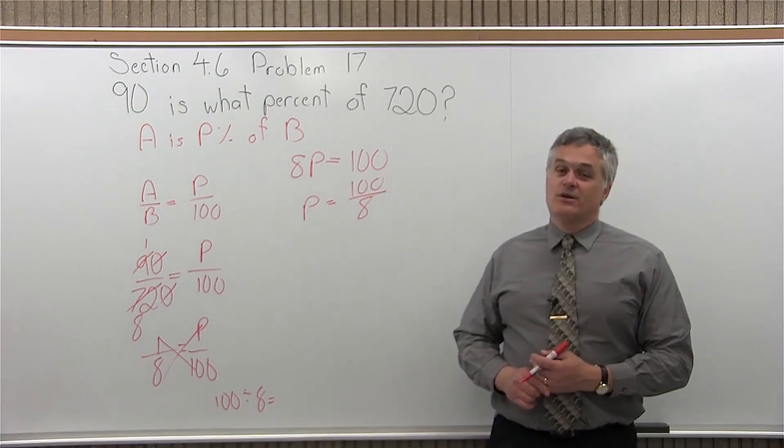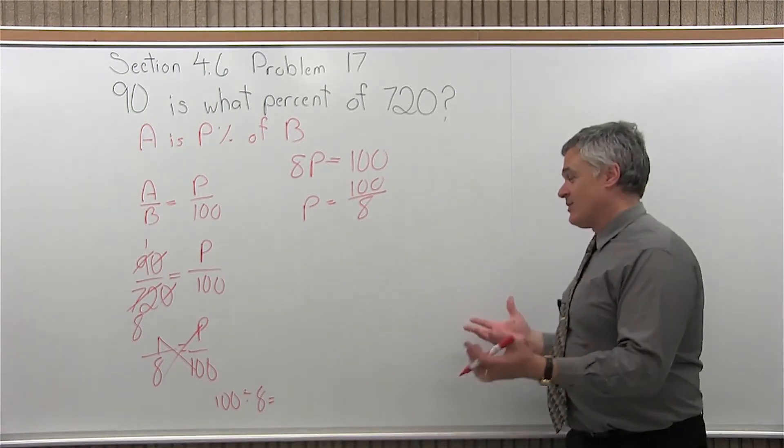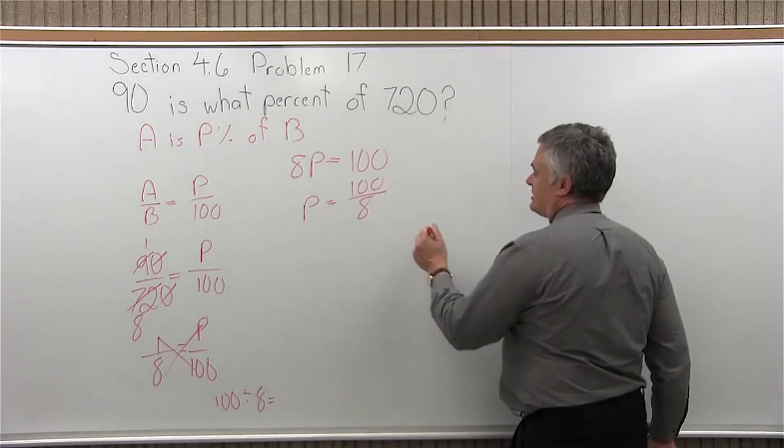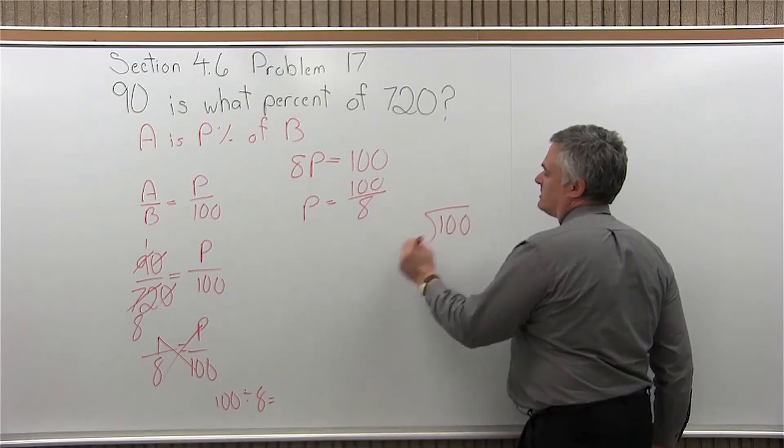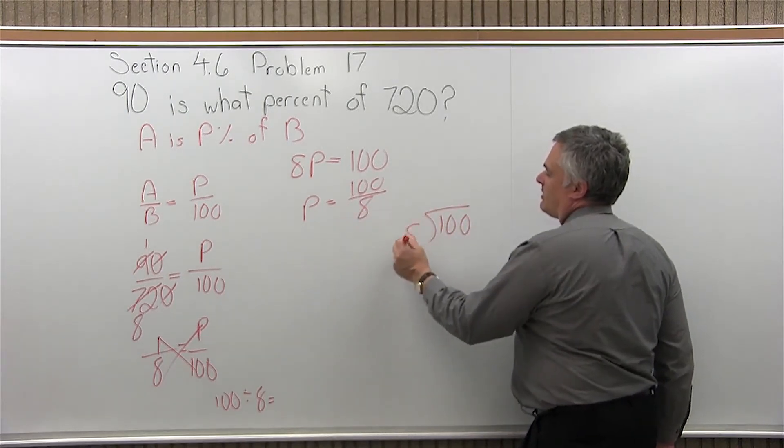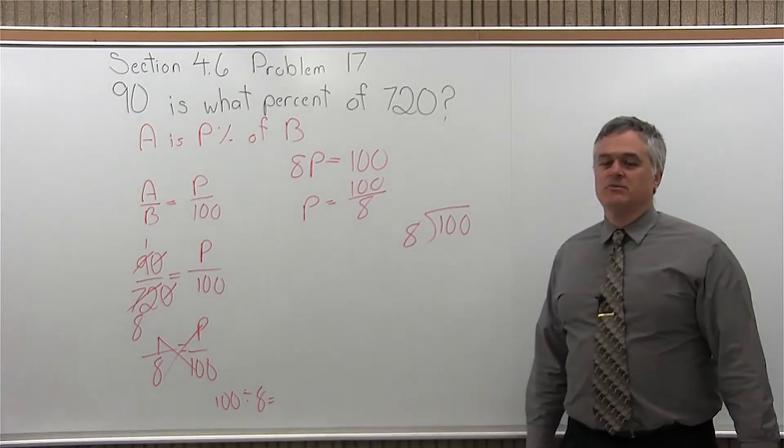On the other hand, if your teacher does not allow you to use a calculator for this class, you have to divide the long way, which is really not the end of the world. So, the numerator of 100 goes under your division symbol. The denominator of 8 will go in front of the division symbol. Just do it.